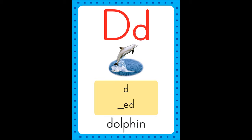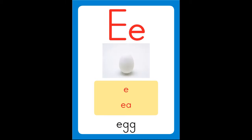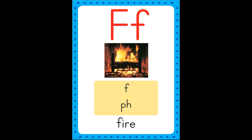D is for dolphin, d-d-dolphin. E is for egg, e-e-egg. F is for fire, f-f-fire.